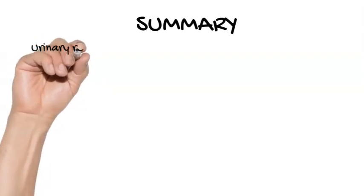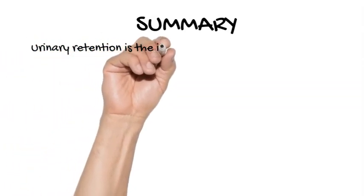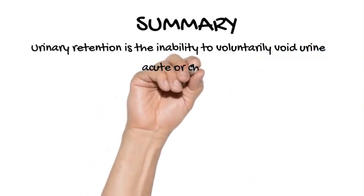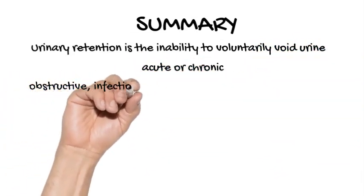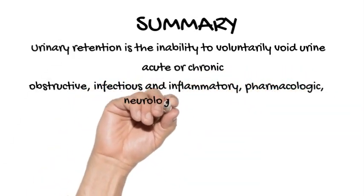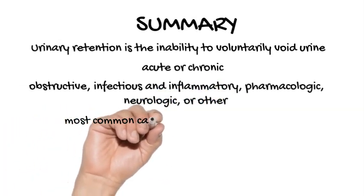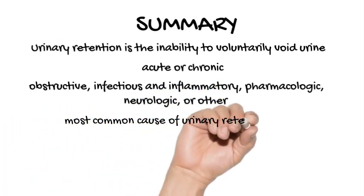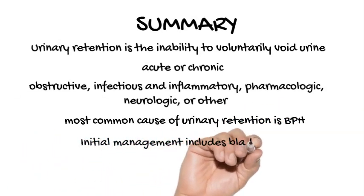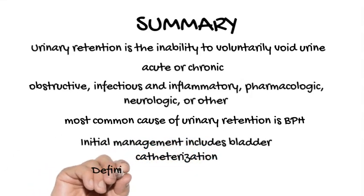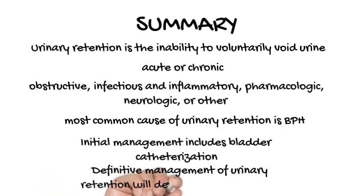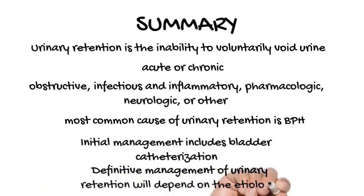In summary, urinary retention is the inability to voluntarily void urine. This condition can be acute or chronic. Causes of urinary retention are numerous and can be classified as obstructive, infectious and inflammatory, pharmacologic, neurologic, or other. The most common cause of urinary retention is benign prostatic hyperplasia. Initial management includes bladder catheterization with prompt and complete decompression. Definitive management of urinary retention will depend on the etiology and may include surgical and medical treatments.